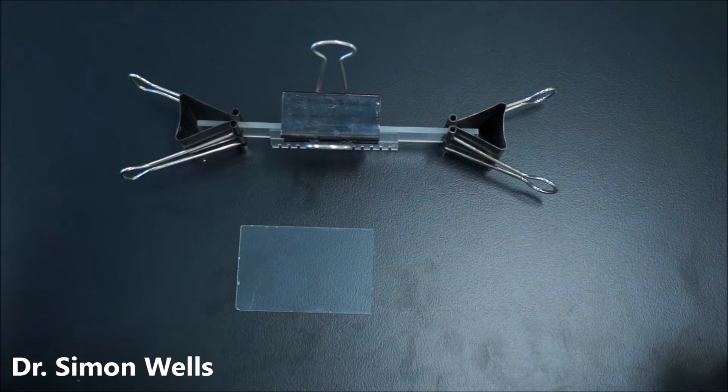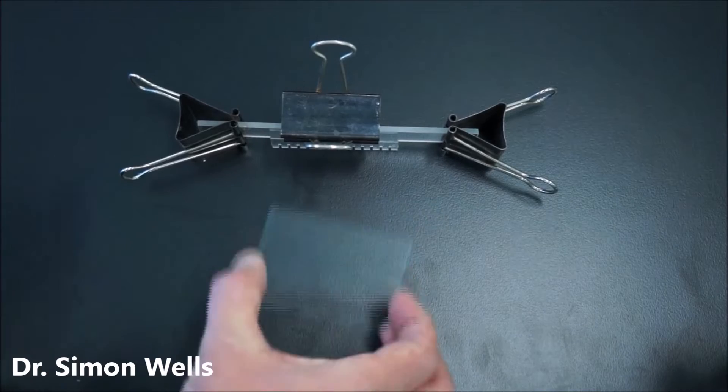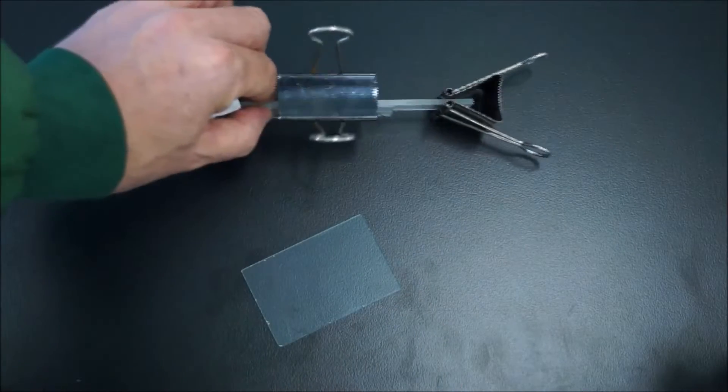The first thing you should do when you're setting up for your gel is to find the apparatus that you need. You'll need a glass plate and a comb that's set up in this bulldog clip apparatus.